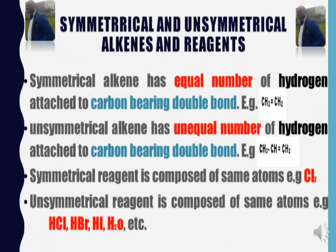A reagent could be symmetrical or unsymmetrical. A good example of a reagent is chlorine gas. Now, symmetrical alkene has an equal number of hydrogens attached to the carbon bearing the double bond. Example: CH₂=CH₂. Unsymmetrical alkene has an unequal number of hydrogens attached to the carbon bearing the double bond. Example: CH₃CH=CH₂. Symmetrical reagent is composed of the same atoms — examples: Cl₂, Br₂, I₂.